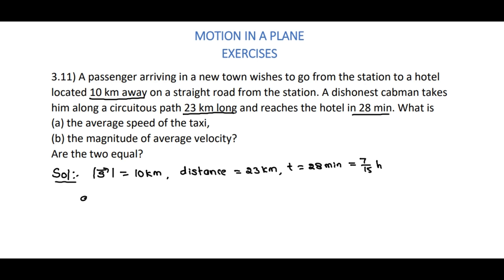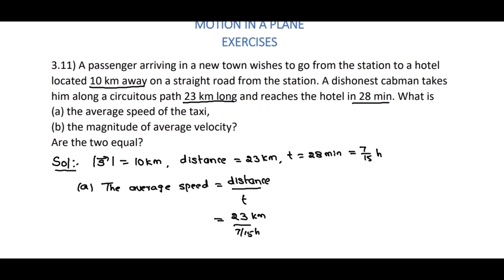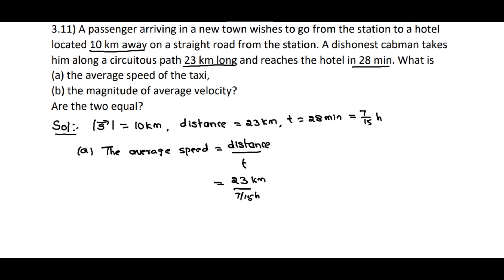Now for part A, the average speed equals distance divided by time taken. That is 23 kilometers divided by 7/15 hour, which equals 49.3 kilometers per hour after simplification.